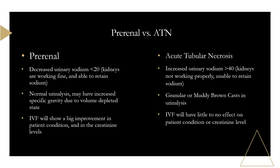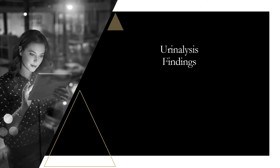Most importantly: the BUN-to-creatinine ratio in pre-renal is always over 20:1. In ATN, it's closer to 10–15:1. Remember — pre-renal is always over 20:1.